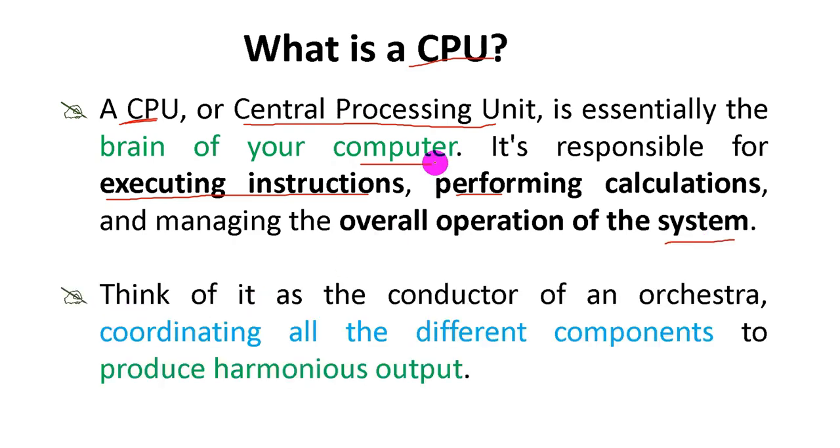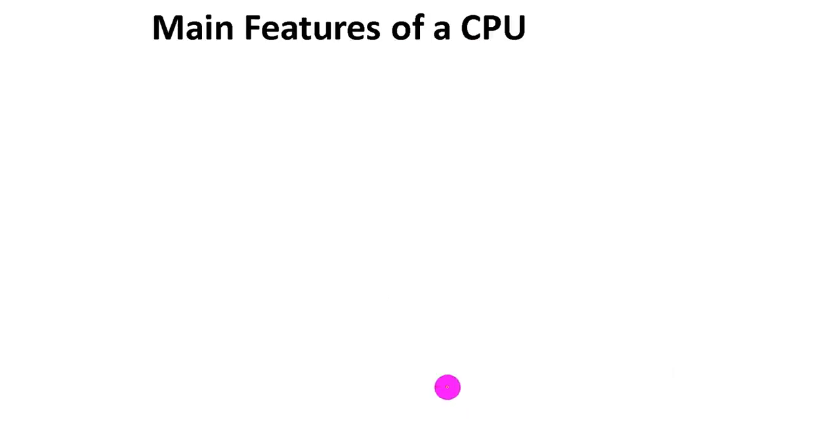You can think of the CPU as a conductor of an orchestra. It coordinates all different components like input, output, or any other ones to produce harmonious output or results. Let's see the main features or characteristics of the CPU.